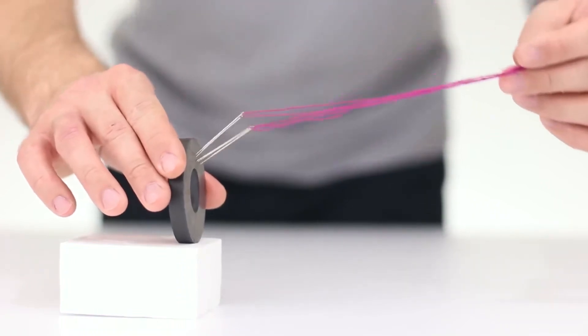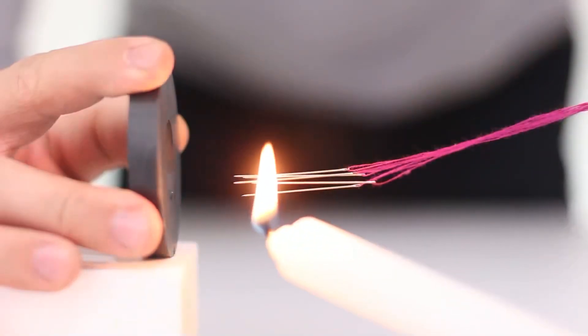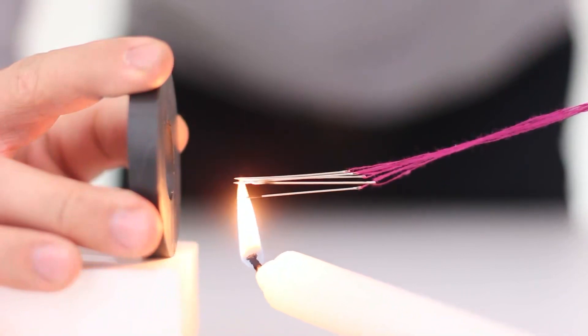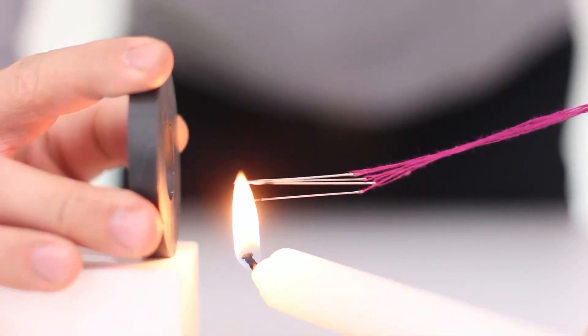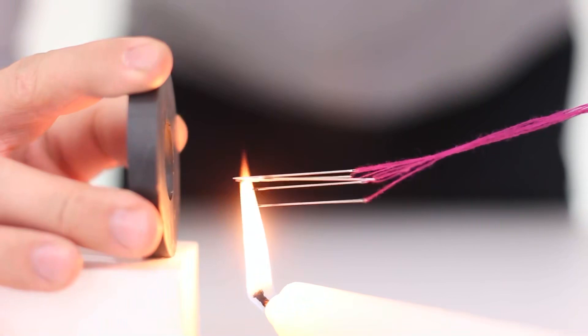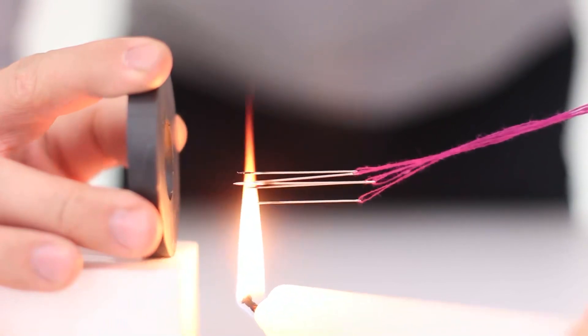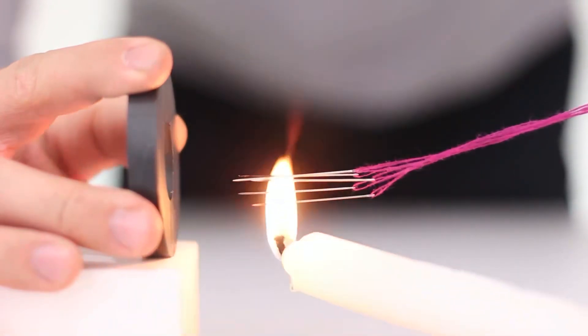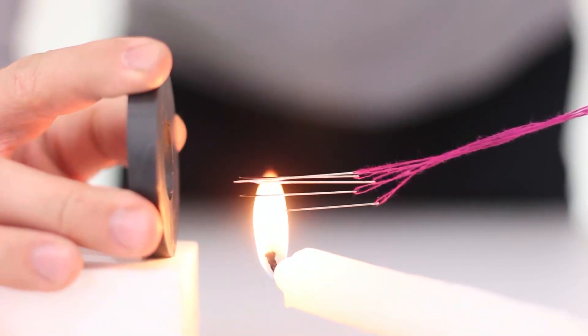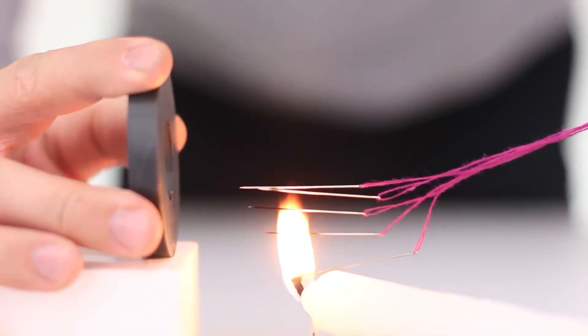We will install the magnet on the stand and take a couple of needles on the thread. As you can see, they immediately begin to reach for pulling the threads. Now, we're heating up the needles as it seems they're starting to lose their interest in the magnet. And they fall completely.